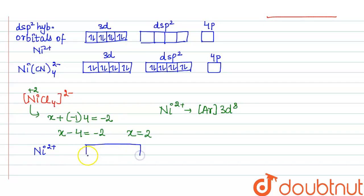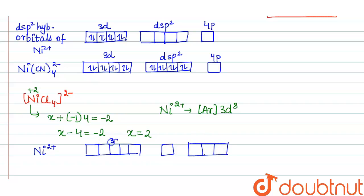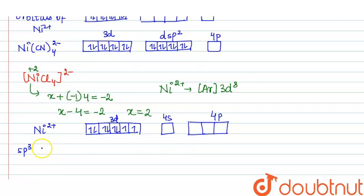Showing the orbital diagram for Ni²⁺: 3d, 4s, and 4p — there are 8 electrons in 3d. Since NiCl4²⁻ is paramagnetic, there are unpaired electrons, so the electrons will not get paired up. In the presence of 4 chloride ions, nickel undergoes sp³ hybridization, forming sp³ hybrid orbitals.